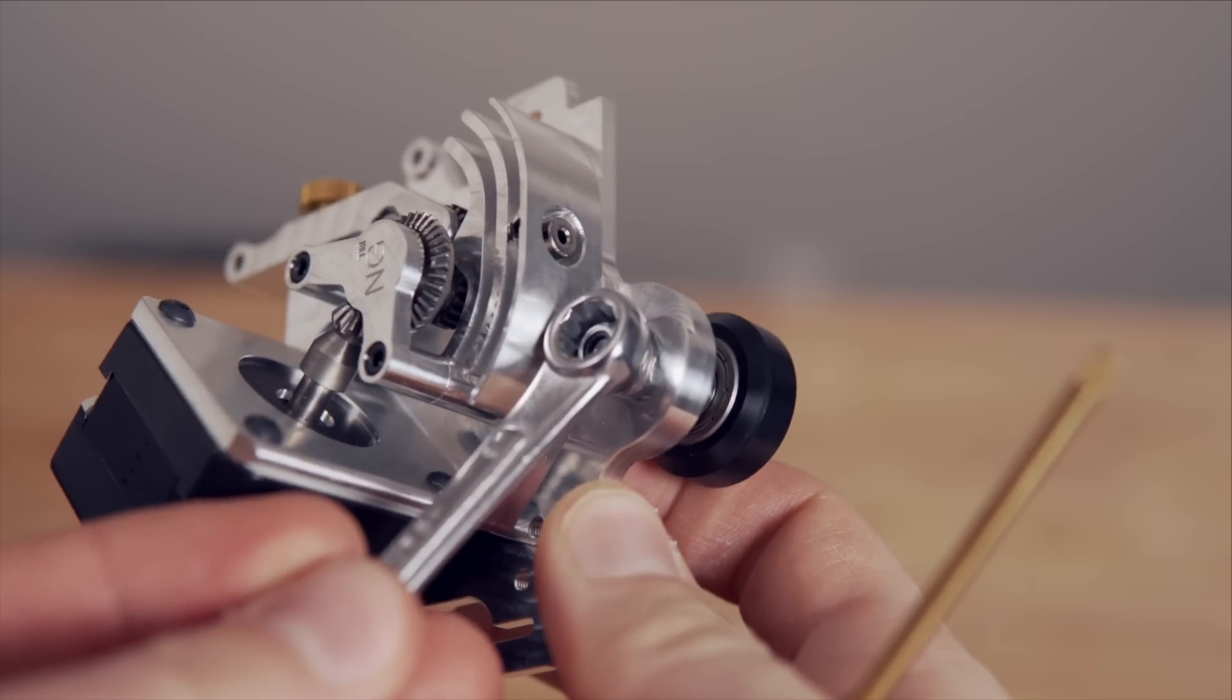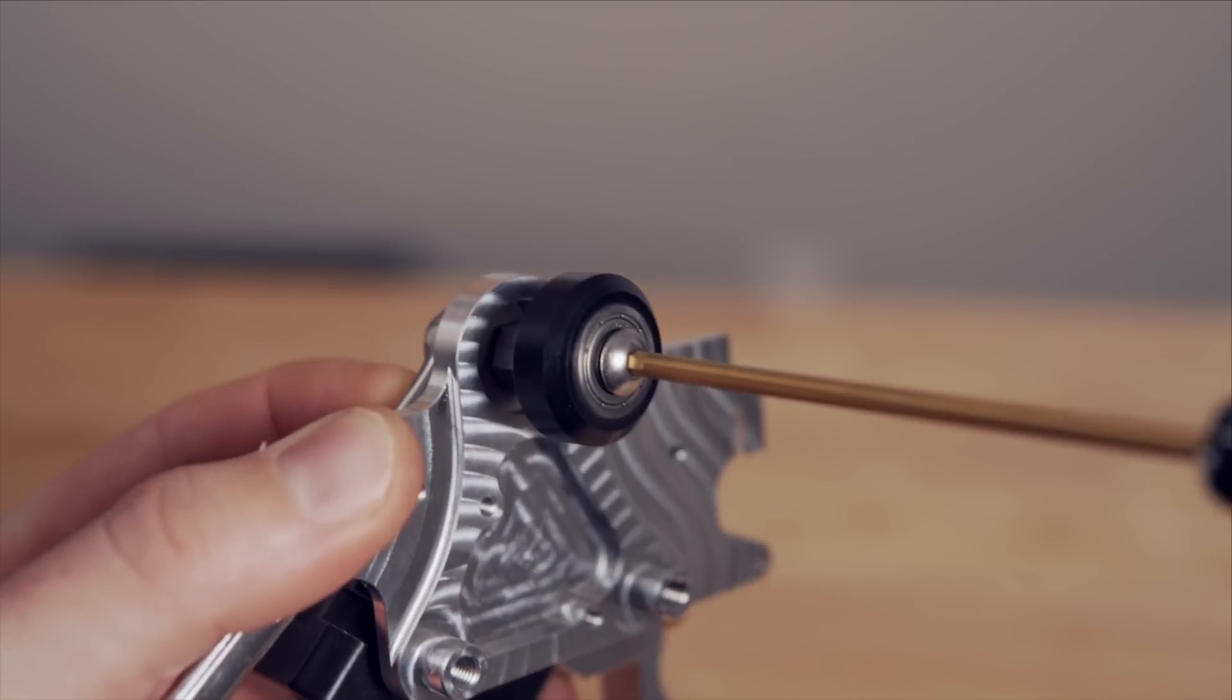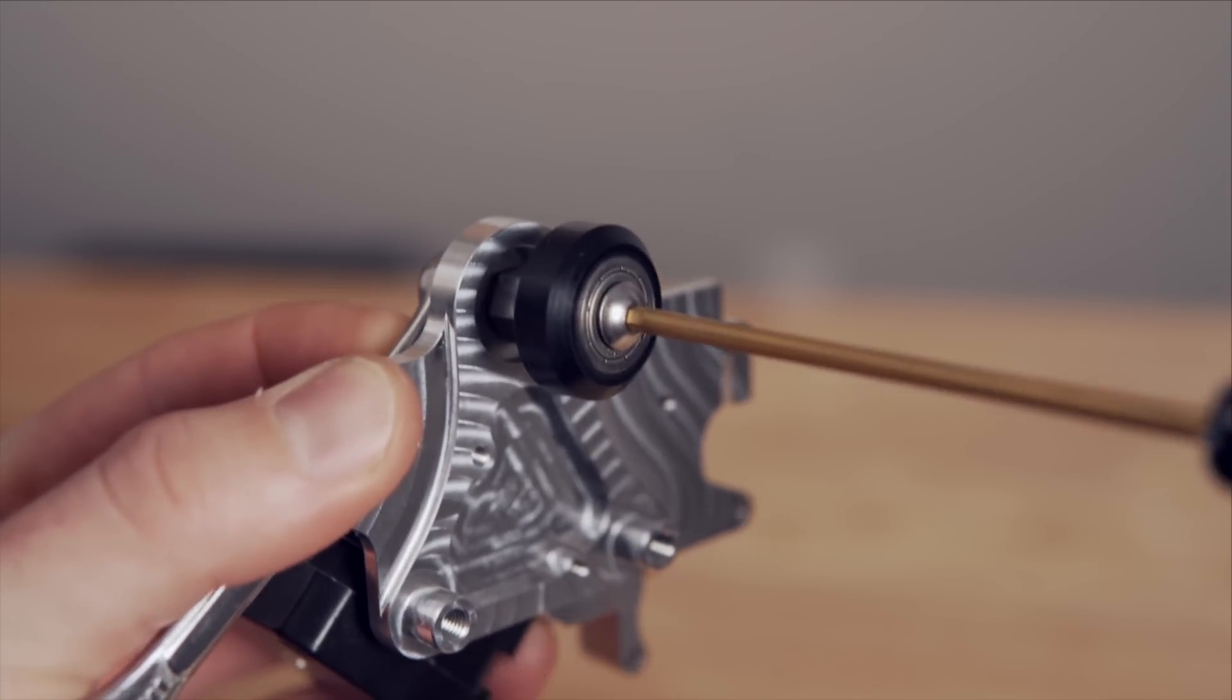Then, just like we did when we were removing it, take your wrench and hold the nylon lock nut in place, while using your Allen wrench to tighten the screw.